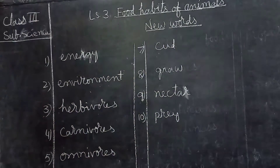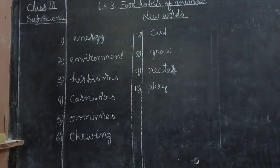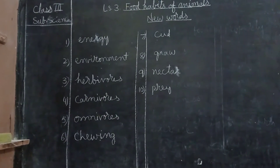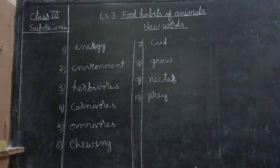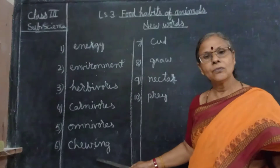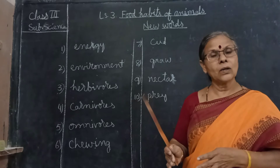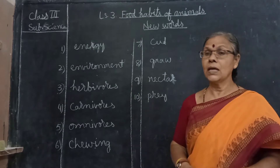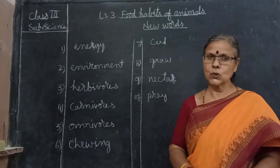I will give you time to observe these spellings and write. Write properly and correctly all the spellings. After writing these words, we will write animals' names — that is, animals categorized as herbivores, carnivores, and omnivores. You have to memorize these spellings and the given animals' names spellings also.